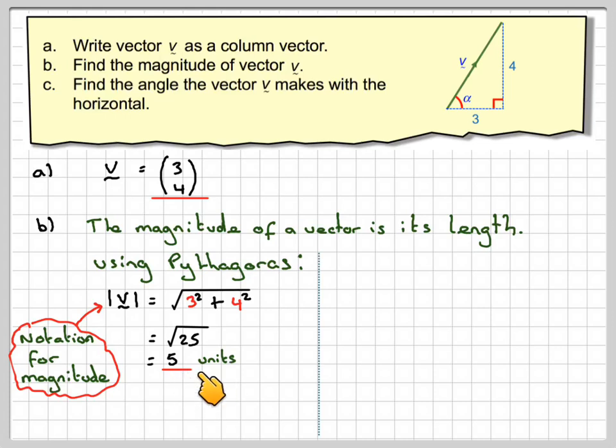This number won't always come out to be an exact number. Right, to find the angle that the vector v makes with the horizontal, we need to find the angle alpha. So, the required angle is going to be alpha.